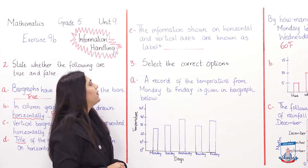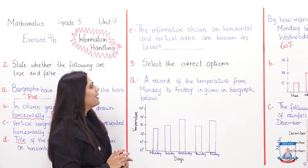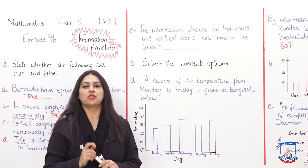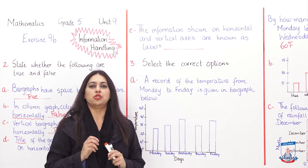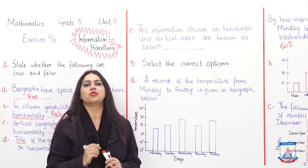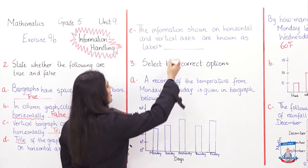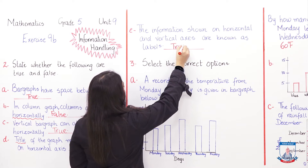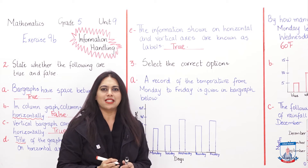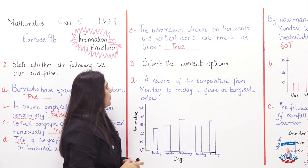Part E: 'The information shown on the horizontal and vertical axes is known as labels.' Students, this statement is TRUE. The information given on the x-axis is indeed what we call labels. So we are done with the true and false section.